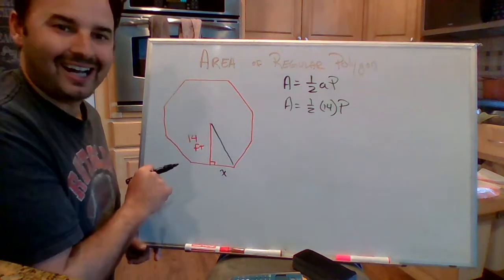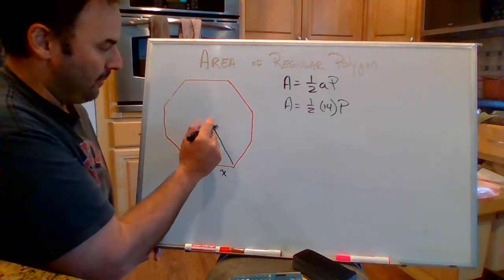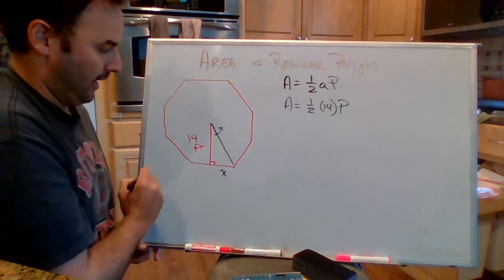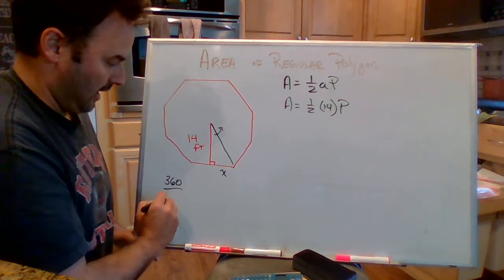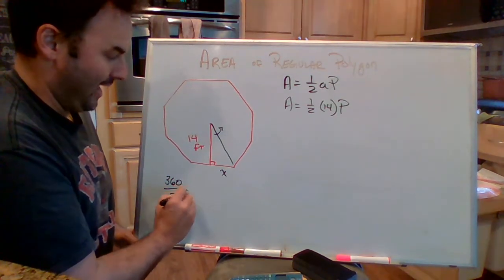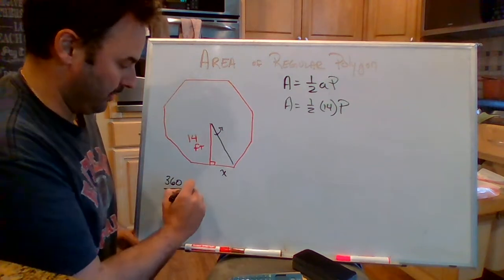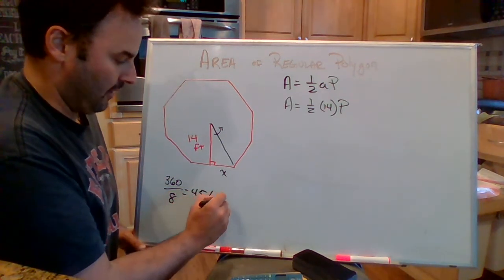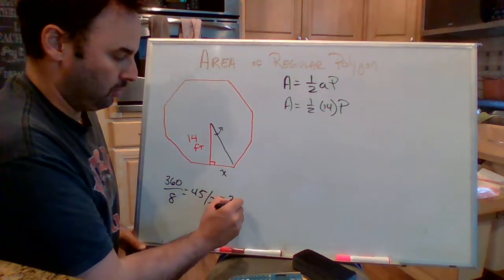All right, so I have an octagon here. I need to find the measure of this angle right there. So remember we take 360 divided by 8 to get each triangle, which will be 45. Then we divide that by 2, 22.5 degrees.